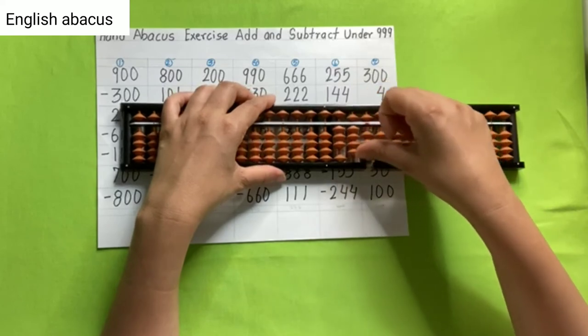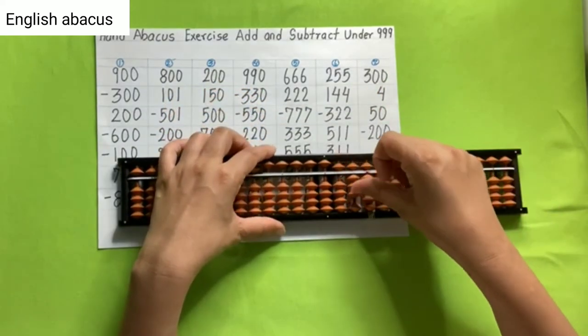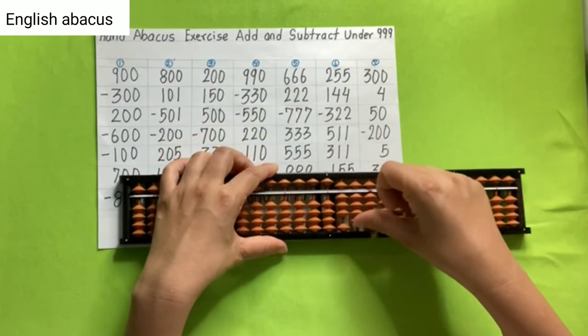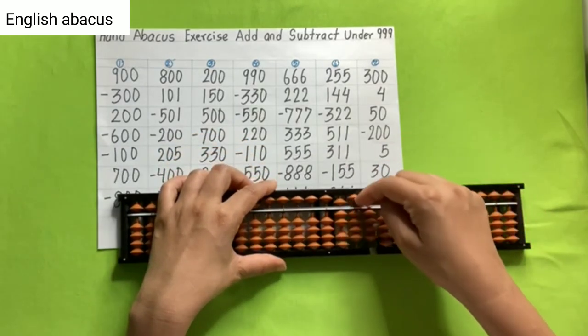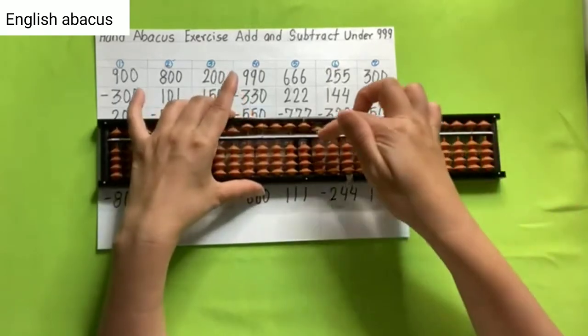255, add 144, reduce 322, add 511, add 311, reduce 155, reduce 244, and your answer is 500.